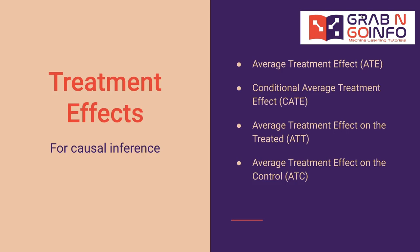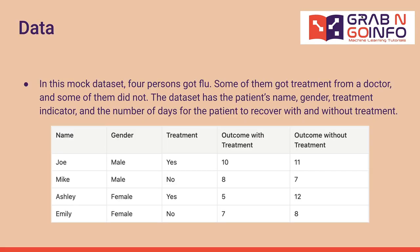We will use a simplified dataset to illustrate the calculation for ATE, CATE, ATT, and ATC. In this mock dataset, four persons got flu. Some of them got treatment from a doctor, and some of them did not.